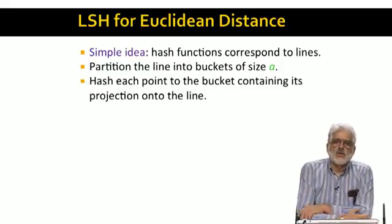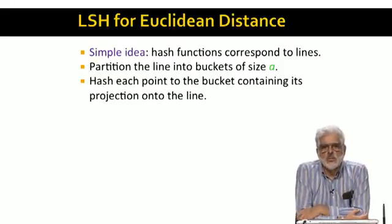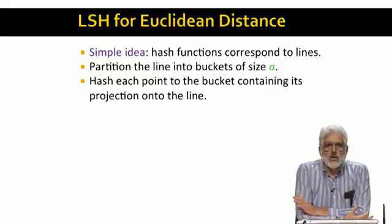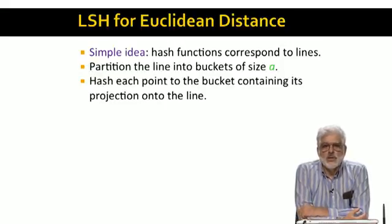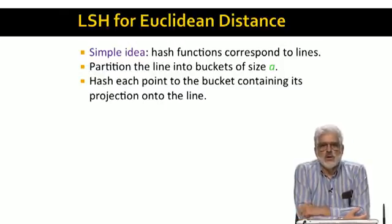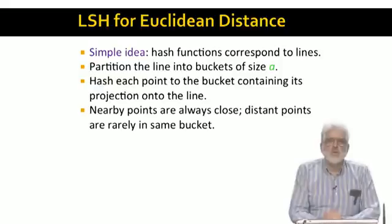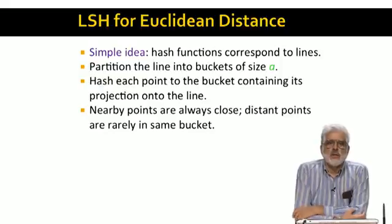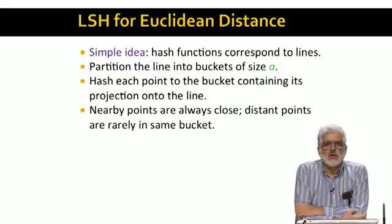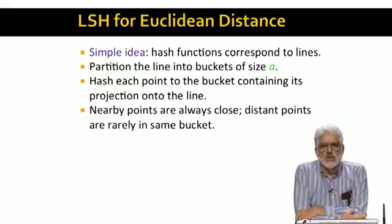Each point x in the d-dimensional Euclidean space is hashed by projecting it onto the line for this hash function. That is, find the hyperplane perpendicular to the line that goes through the point x and see where on the line, the hyperplane intersects the line. That is the projection of the point x onto the line. The reason this works as an LSH family of hash functions is that points that are close in the space must always project onto points that are close on the line. Thus, they have a good chance of falling into the same bucket.